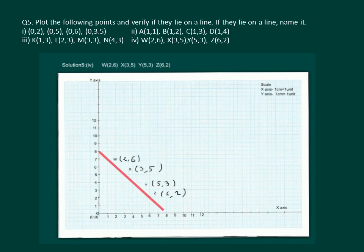On joining the points W, X, Y and Z we find that they lie on a line and we can name it as WZ or XY or WX anyways we feel like.